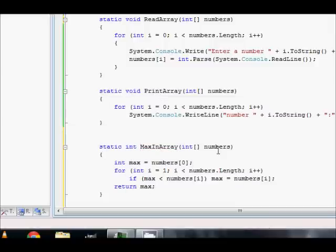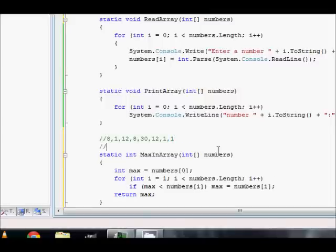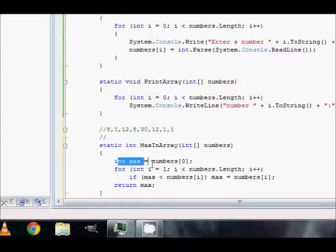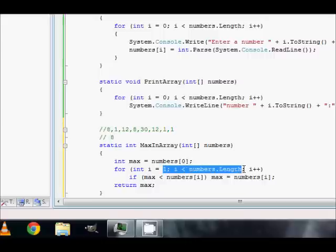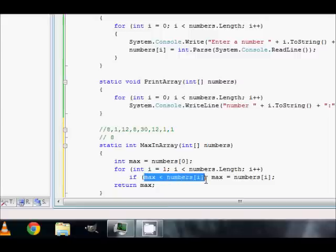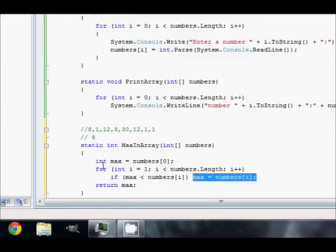So, what's happening here? Let's say you enter the numbers or the values 8, 1, 12, 8, 30, 12, 1, 1. Let's assume for the sake of example that you have these numbers here. So what's the value of max? Well, when this statement gets executed you will have what? Your max is 8. Then i will start moving from 1 to the last element. So, what happens is you will check max which is 8 with numbers of i. i starts from 1. So, you will check 8 with 1. You will find that this condition fails. So, this part does not execute. So, i increases.